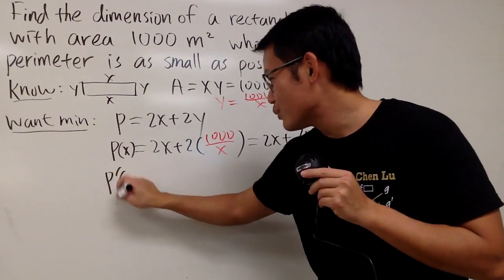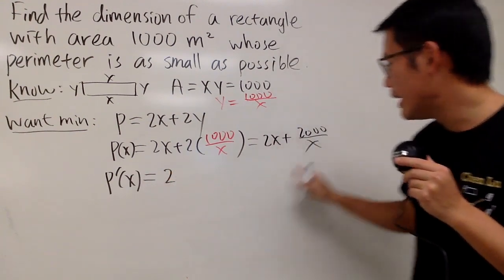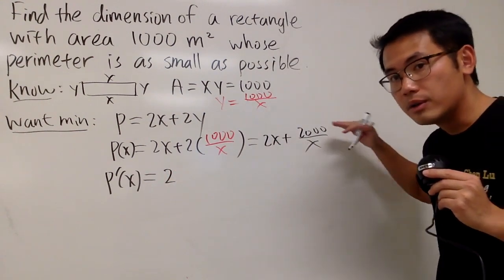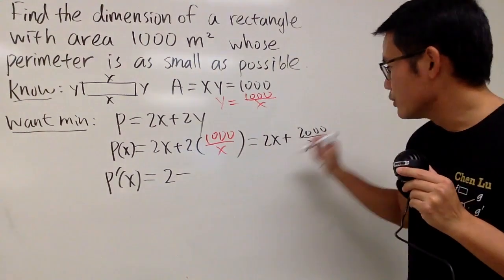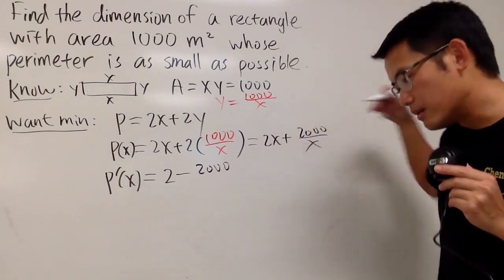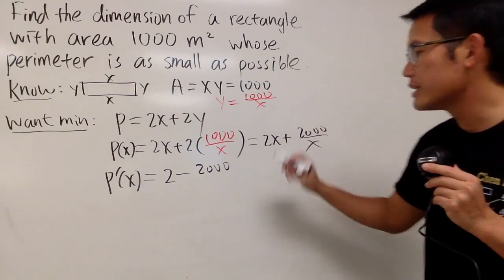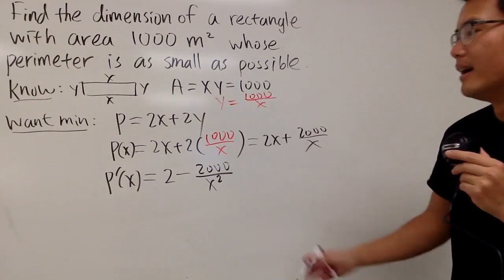Anyway, derivative. Derivative of 2x is just 2. And look at this as 2000x to the negative 1 power, bring the negative 1 to the front. 2000 stays. And x to the negative 1 minus 1 to the power, so we get x to the negative 2, which is like this on the bottom right here.